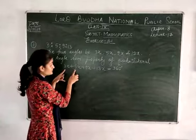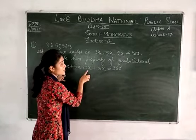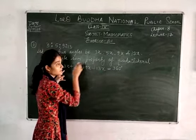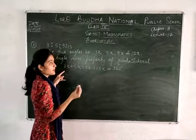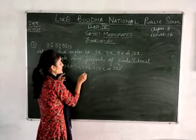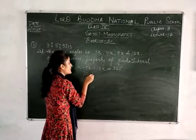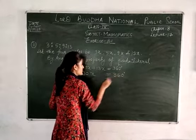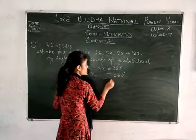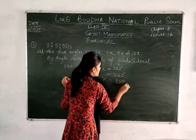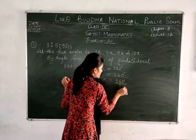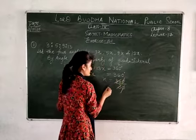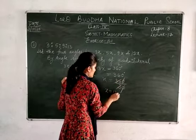3 plus 5 is 8, 8 plus 9 is 17, 17 plus 13 is 30. So 30x equals 360, and therefore x equals 360 divided by 30, which gives x equals 12.